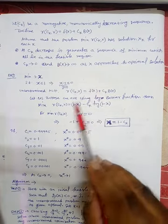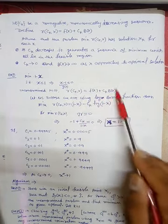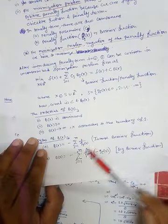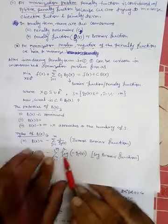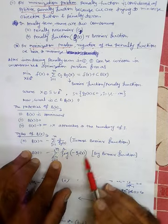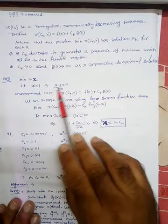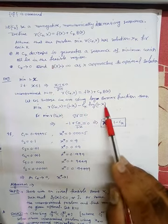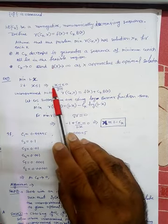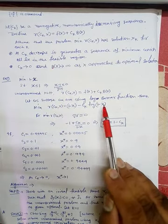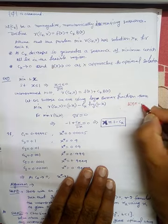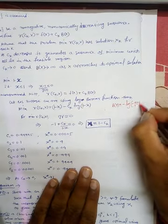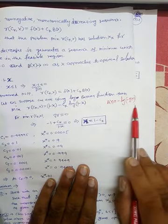For b(x), we have two options: inverse barrier or log barrier. Here we use the log barrier function: b(x) = −log(−g(x)). Since we have only one constraint, r = (1 − x) − c_k * log(1 − x). For the minimum of r(c_k, x), the gradient of r is zero. Differentiating with respect to x: −1 + c_k/(1 − x) = 0, giving x = 1 − c_k.